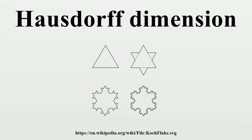Hausdorff dimension: The Hausdorff dimension of S is defined equivalently as the infimum of the set of D ∈ [0, ∞) such that the D-dimensional Hausdorff measure of S is 0. This is the same as the supremum of the set of D ∈ [0, ∞) such that the D-dimensional Hausdorff measure of X is infinite.